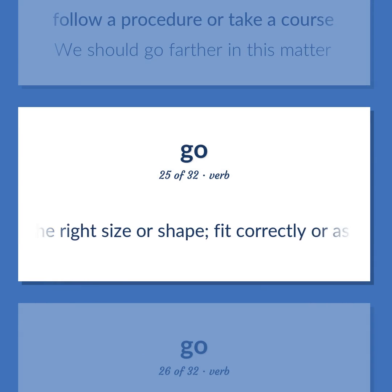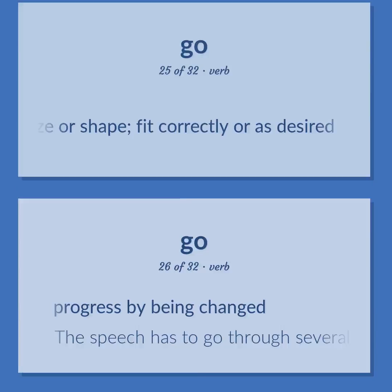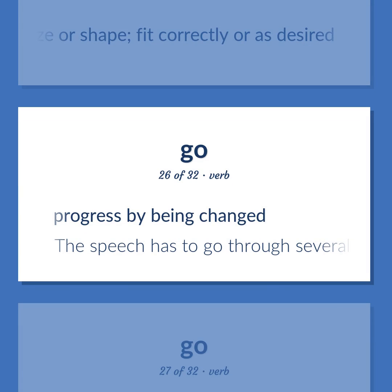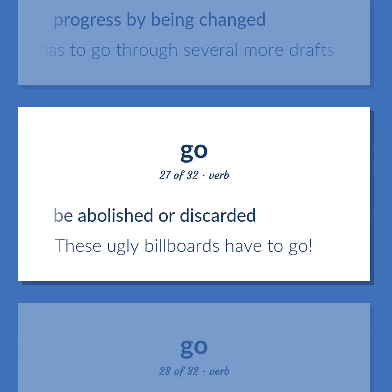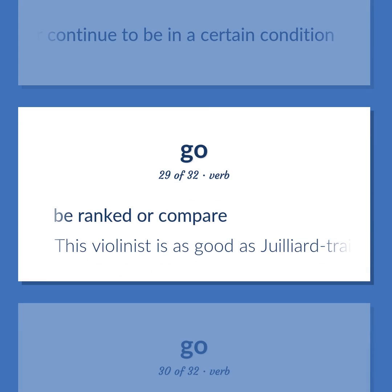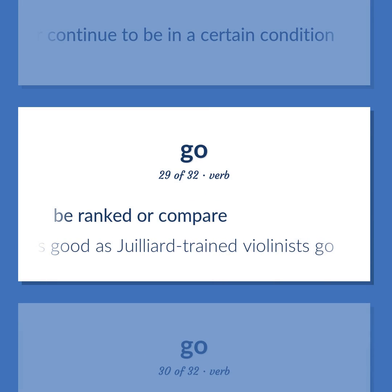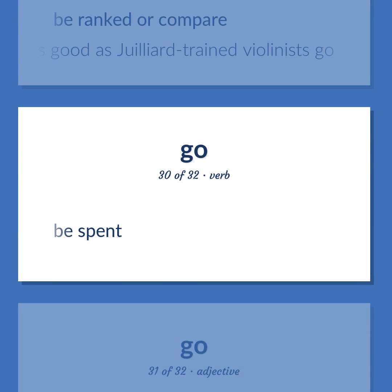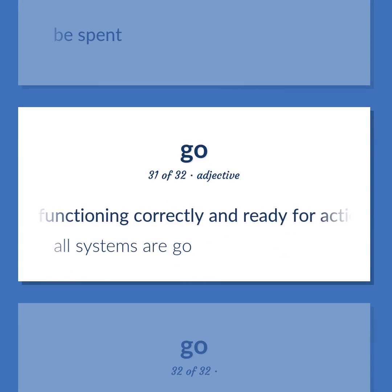Be the right size or shape; fit correctly or as desired. Progress by being changed. The speech has to go through several more drafts. Be abolished or discarded. These ugly billboards have to go. Be or continue to be in a certain condition. Be ranked or compare. This violinist is as good as Juilliard-trained violinists go. Be spent. Functioning correctly and ready for action. All systems are go.